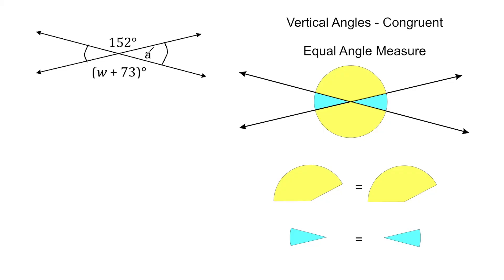So whatever the angle measure of A is, is going to be identical to the angle measure on the opposite side. And for these two angles here, this one is given 152 degrees, the one on the other side, which is vertical to this angle right here, is also going to be congruent. So we should know that whatever W is added to 73 is going to be equal to 152. So what we're going to do is solve for W, and then we're going to identify the angle measure of each one of these four angles.